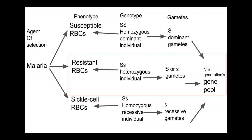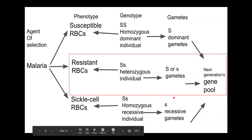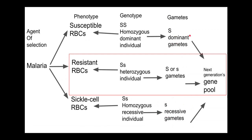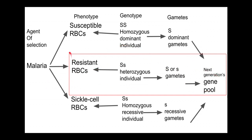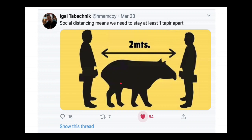Unfortunately, only a portion of the heterozygote's children will themselves be heterozygous. They have the possibility of producing little s little s homozygous offspring with sickle cell anemia, or big S big S homozygous offspring that are susceptible to malaria. That's one of the trade-offs when the most fit genotype is the heterozygous one.